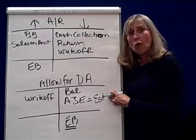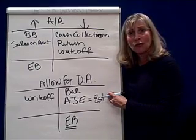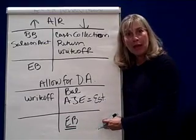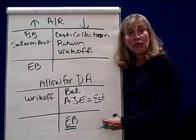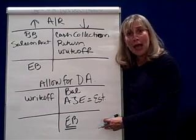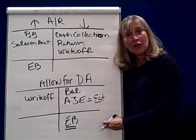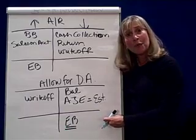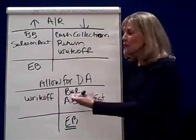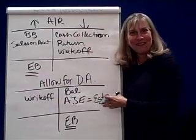At this point you're saying, what kind of account is allowance for doubtful accounts? Well, it's an asset account, but as you can see, its balance is always opposite of most assets. So it's called a contra asset account — contra, or contrary asset — meaning it has the opposite balance than you'd expect. So it has a credit balance, whereas all other asset accounts have debit balances.